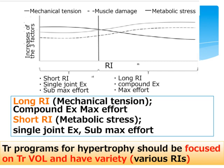To summarize the effect of rest interval length on muscle hypertrophy: long interval induces mechanical stress well and is good for high-intensity training and compound exercises such as squat, deadlift, and bench press. On the other hand, short rest interval induces metabolic stress well and is good for single-joint exercises and sub-maximum intensity efforts. Training programs for muscle hypertrophy should focus on training volume rather than rest interval length, and aim for various stimuli by using various rest interval lengths to maximize muscle hypertrophy.